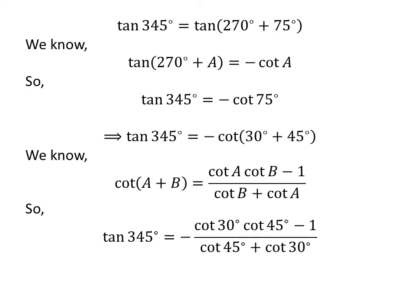Application of the above identity gives us tangent of 345 degrees is equal to minus cotangent of 30 degrees times cotangent of 45 degrees minus 1, upon cotangent of 45 degrees plus cotangent of 30 degrees.